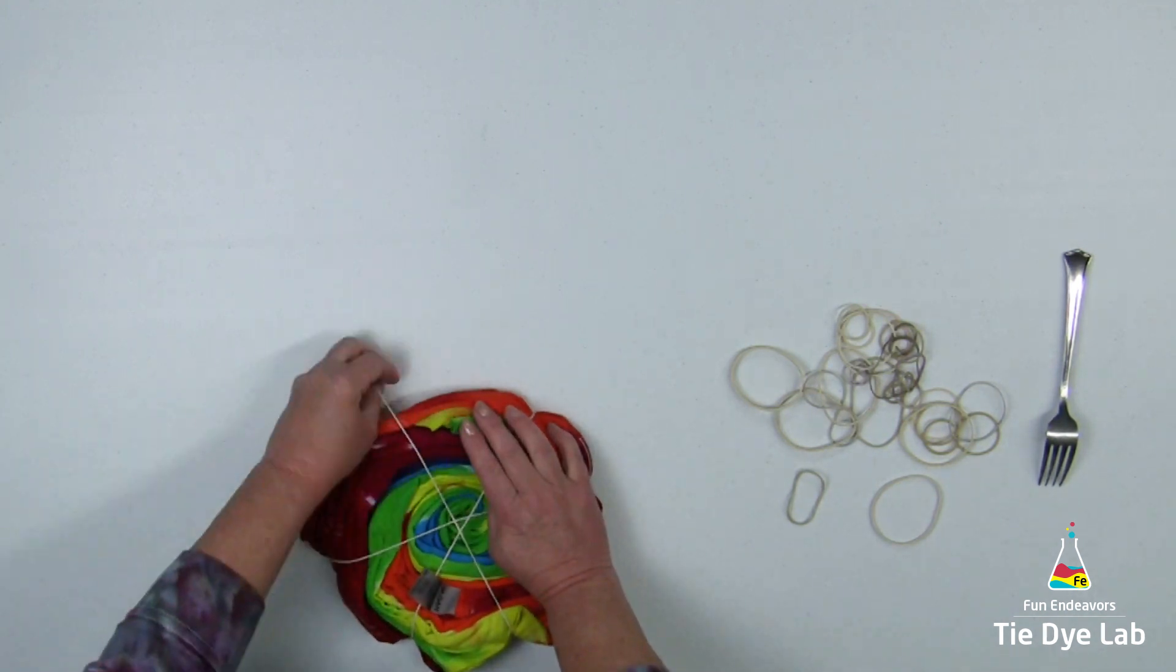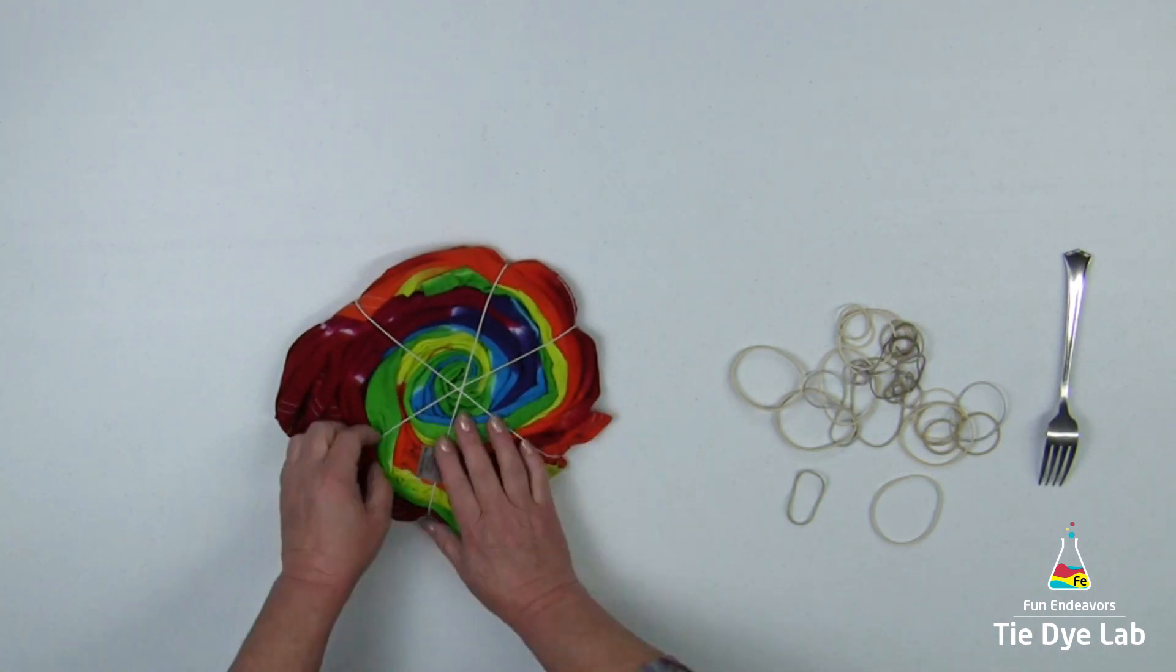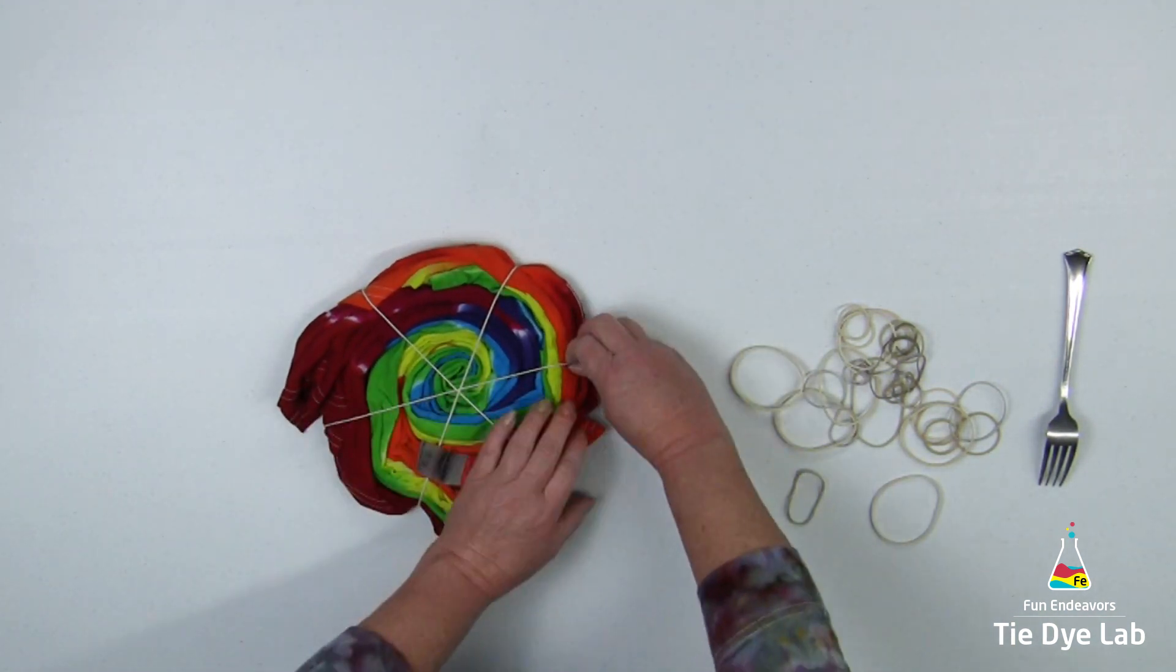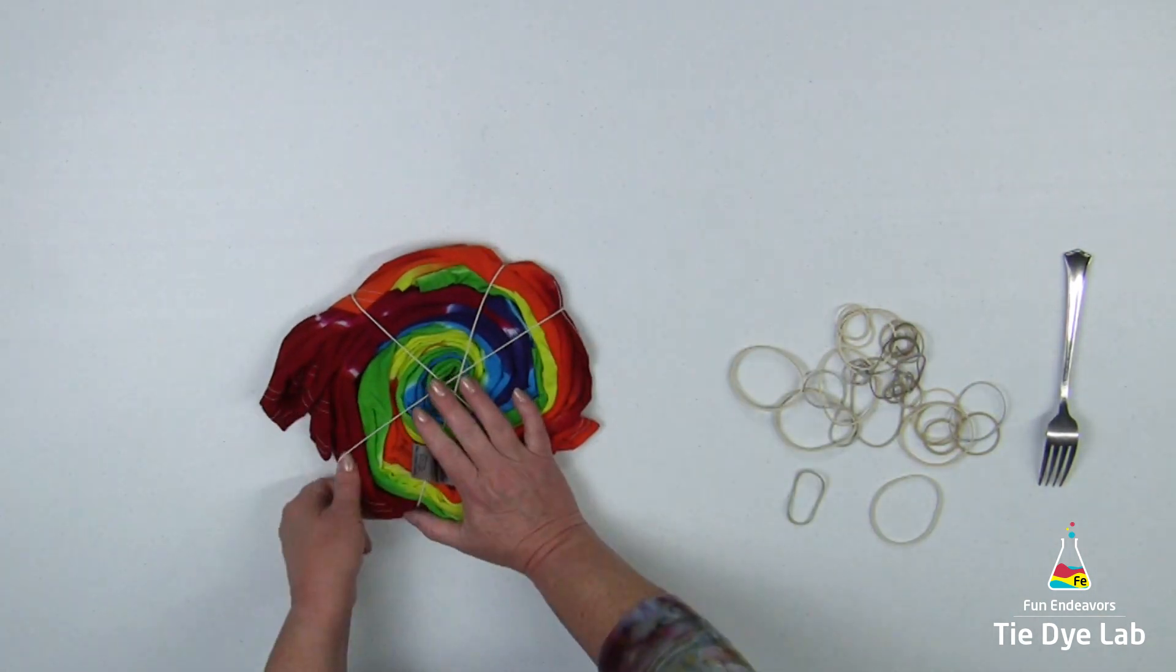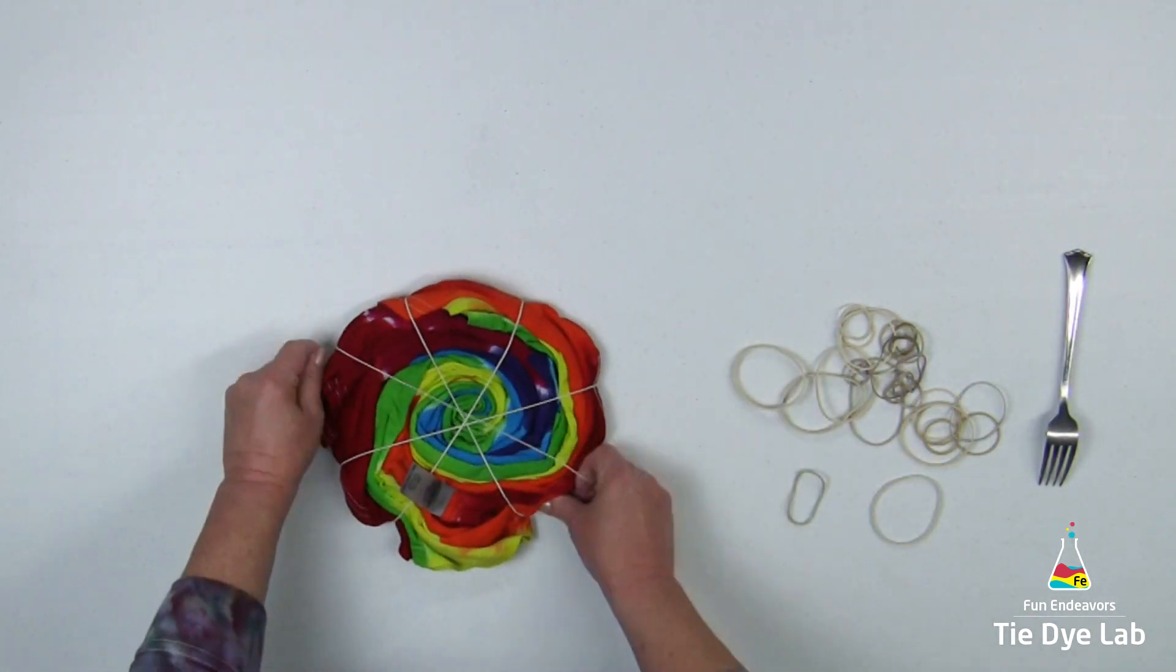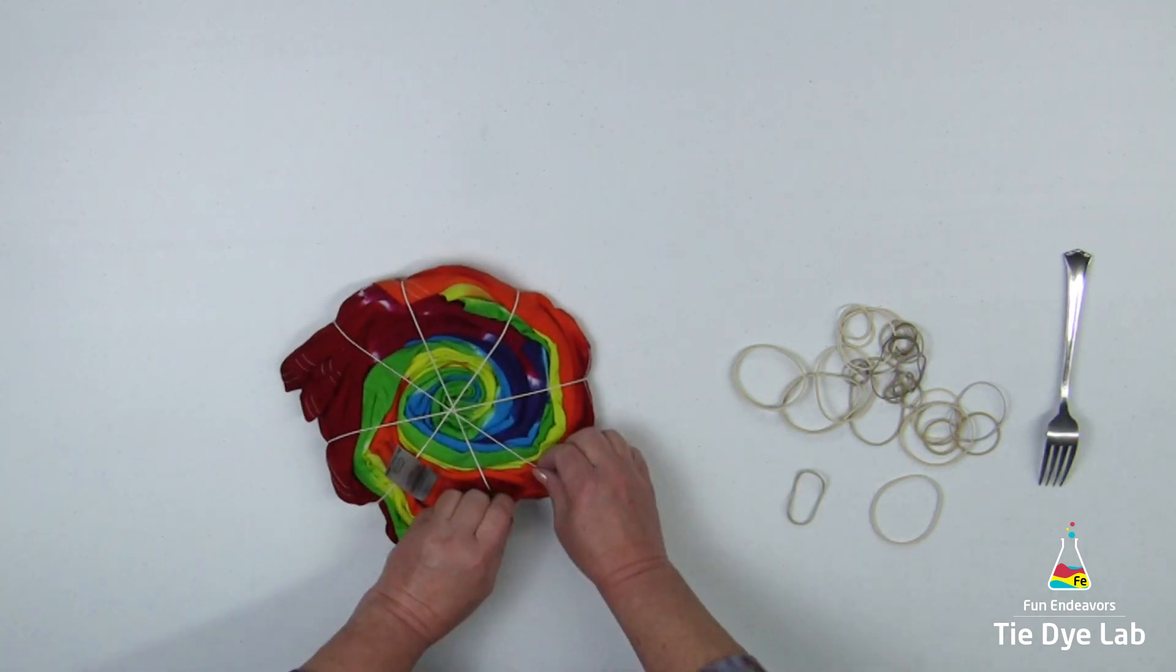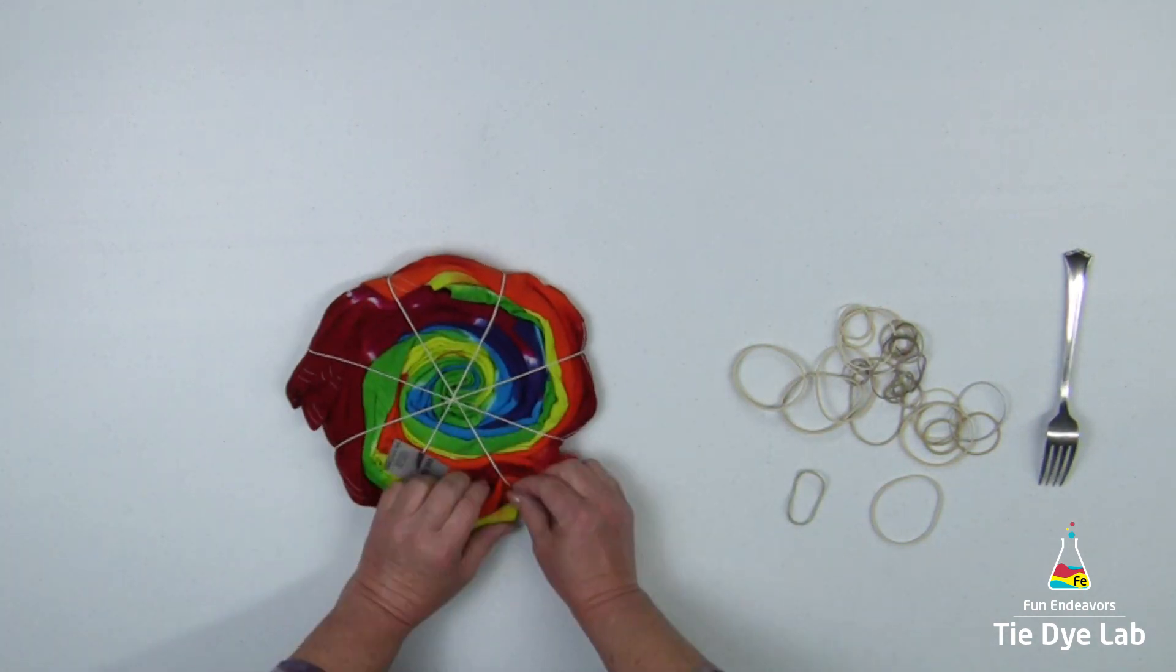I set the shirt aside and left it for probably about 12 hours just because I was busy tying up a few other shirts, so it's not soaking wet but it's also not completely dry yet. It is just barely, barely damp.